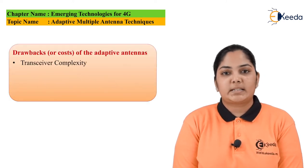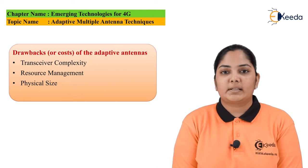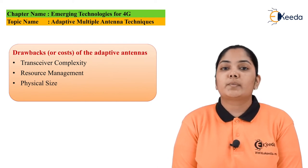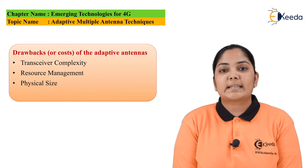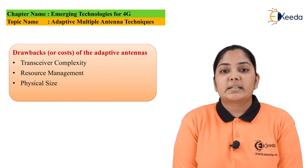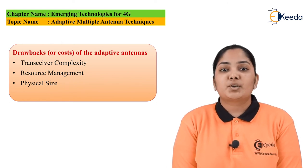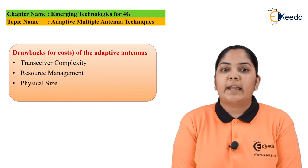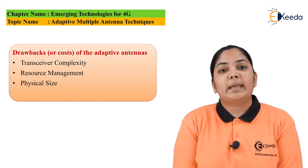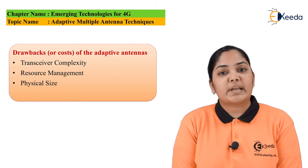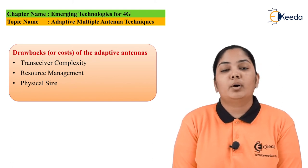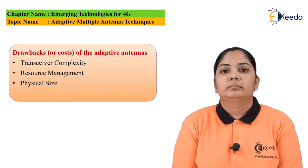Now let us see the drawbacks of using this technique. The first is transceiver complexity. Since we are using MIMO technologies with multiple antennas at the transmitter and receiver, real-time calibration of all these antennas is required, and transceiver complexity increases greatly. The next drawback is radio resource management. Resource management is required extensively — when a connection is initiated, the network must provide the demanded channels. Since we are using multiple antennas, the number of channels also increases, placing an extremely high demand on the RRM unit.